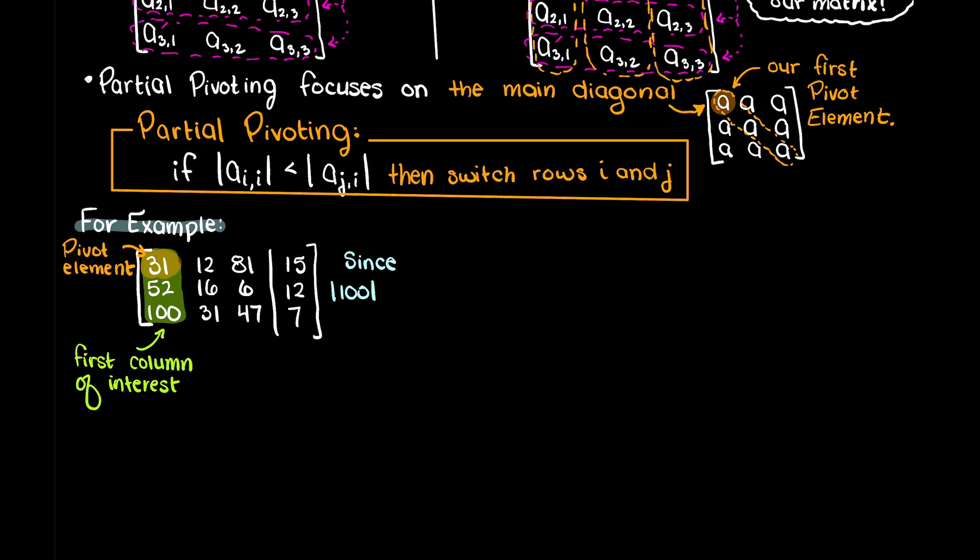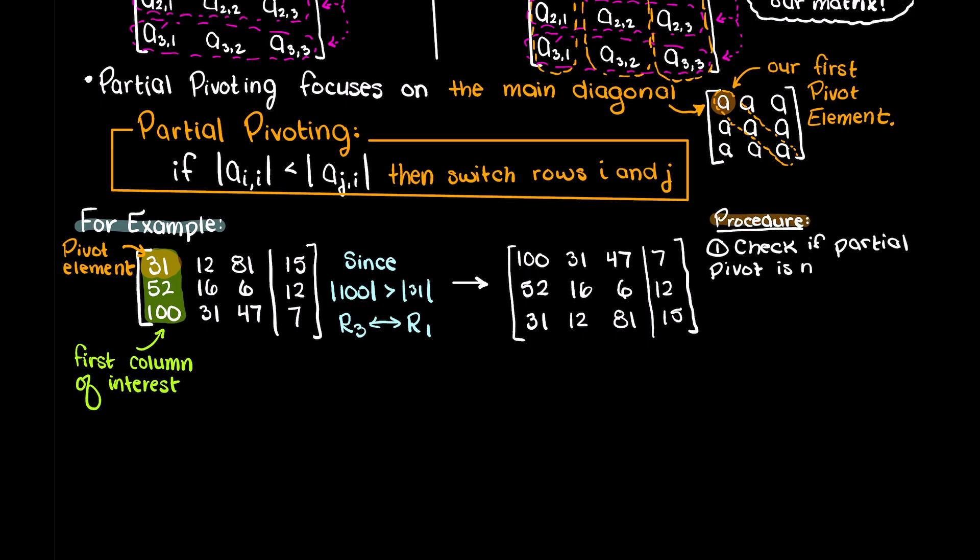If it is not, then we switch that with the row that does have the largest absolute element in that given column. This essentially allows us to have the largest number possible as our divisor in our scaling factor, which we commonly use to reduce rows.